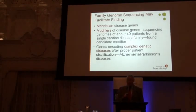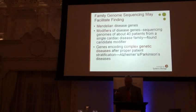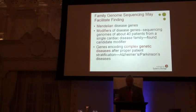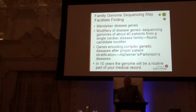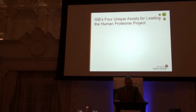We think family genome sequencing can work for complex genetic diseases like Alzheimer's — but to do that we have to stratify Alzheimer's into its different types. My prediction is that in 10 years or less, almost all of you will have your genome sequence as a fundamental part of your medical workup, a key part of the billions of data points we're talking about.